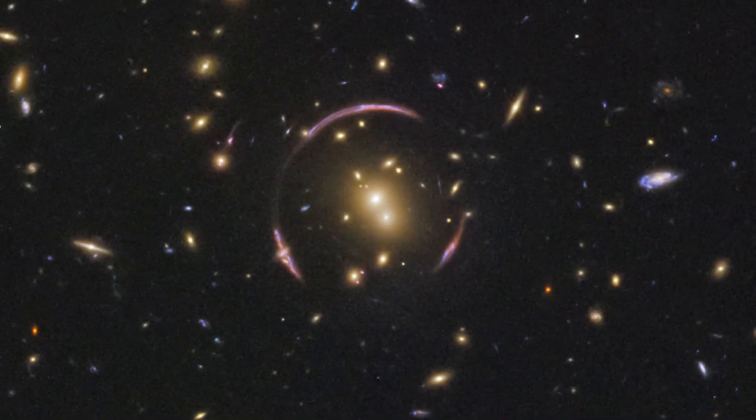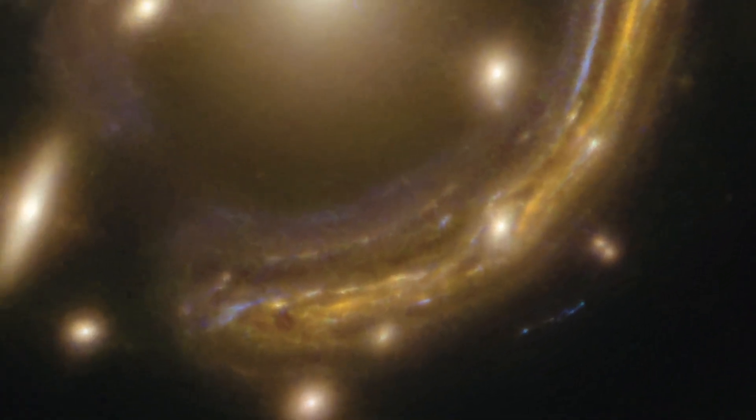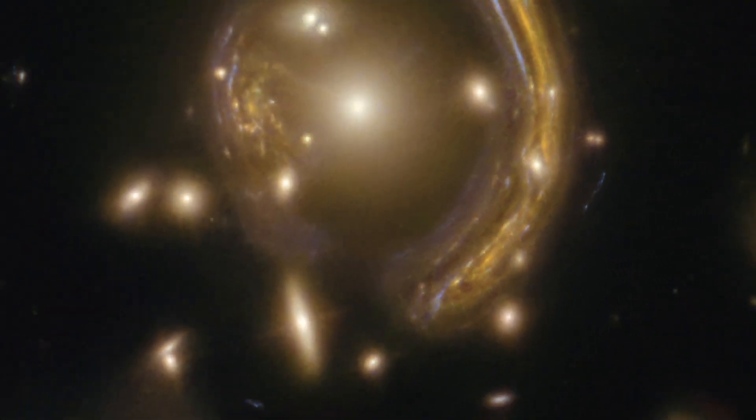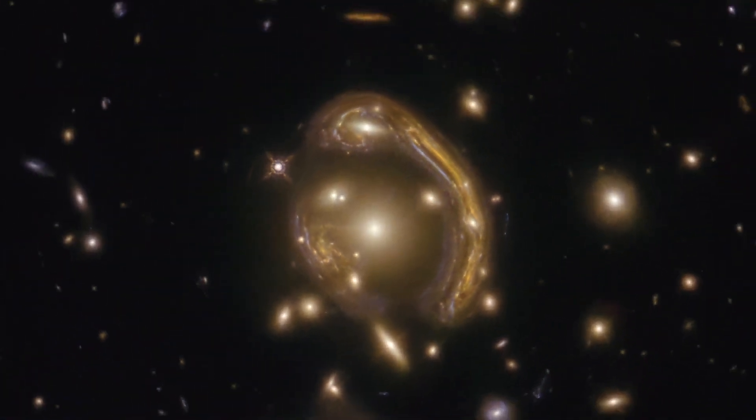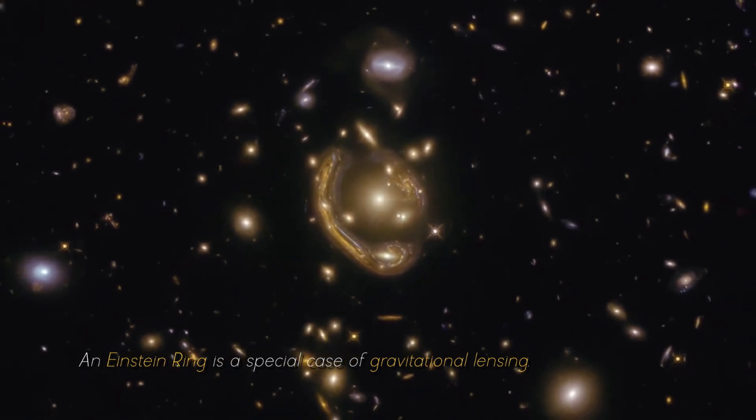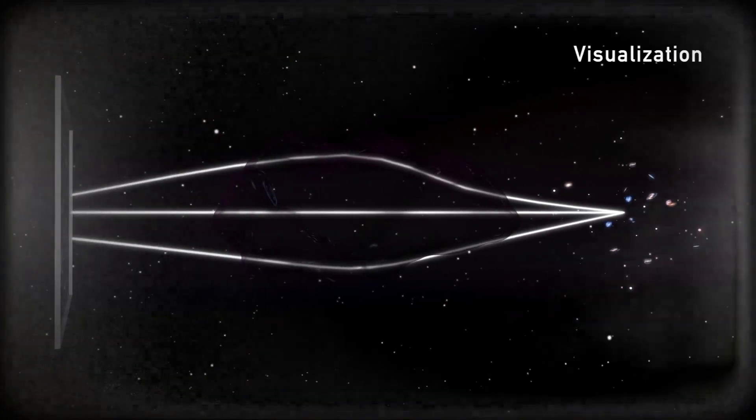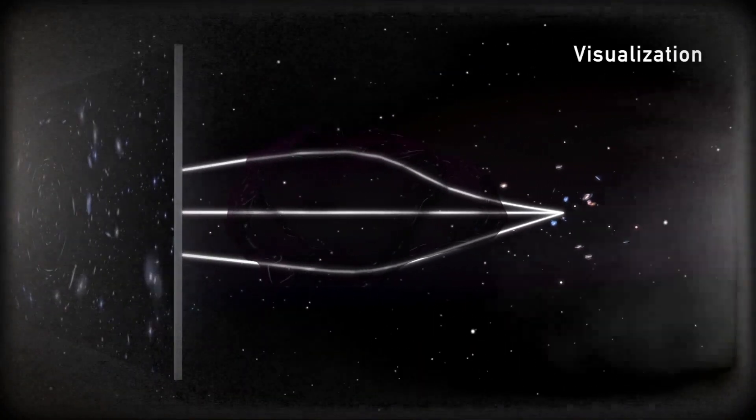What is an Einstein Ring and how is it formed? Before diving into the details of the fossil galaxy, it's important to understand the basics of this phenomenon. An Einstein Ring is a special case of gravitational lensing, a phenomenon predicted by Albert Einstein's general theory of relativity. According to this theory, gravity is interpreted as the curvature of space and time due to the presence of mass.